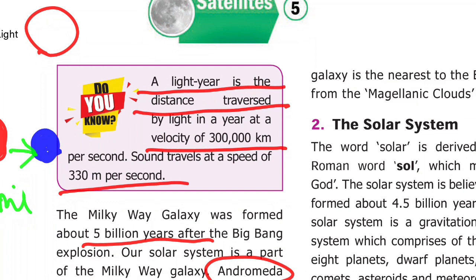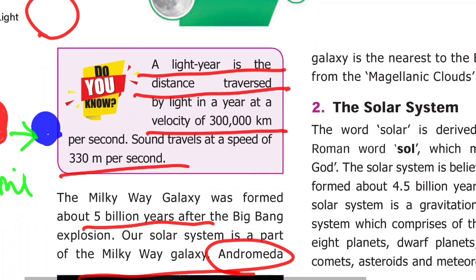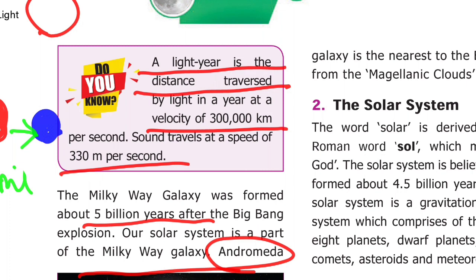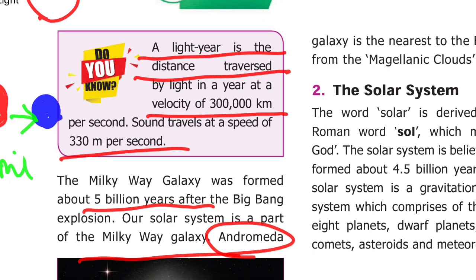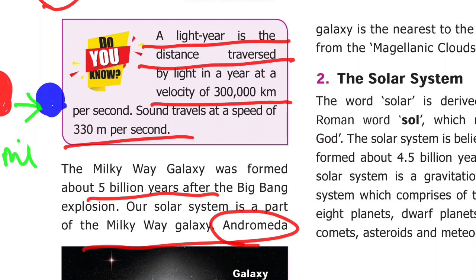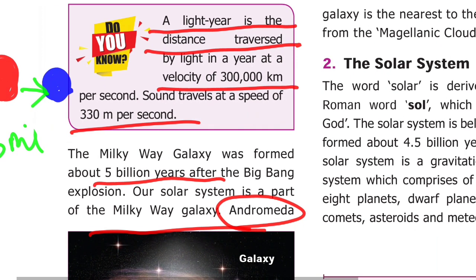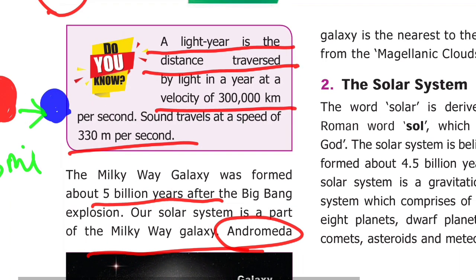A light year is the distance traversed by light in one year at a velocity of 300 km per second. Sound travels at a speed of 330 m per second. A light year is the distance that light covers in one year at 300 km per second, and this unit is used to measure distances between celestial bodies in space.